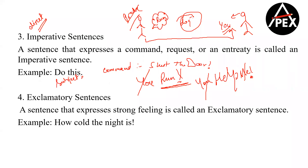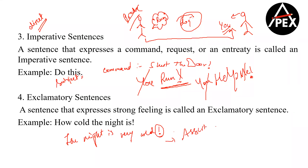Let's move on to exclamatory sentences. An exclamatory sentence is a sentence that expresses any strong feeling. For example: 'How cold the night is!' This is a very poetic way of saying the night is very cold. The problem is: if you say 'the night is very cold' without the exclamation mark and put a full stop, it becomes an assertive sentence — because you can say the night is cold or not cold. Only because of the punctuation am I able to differentiate.